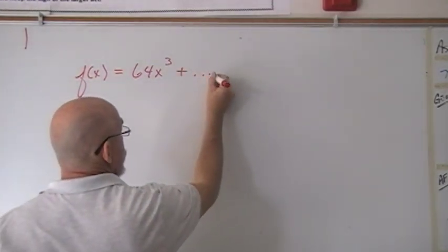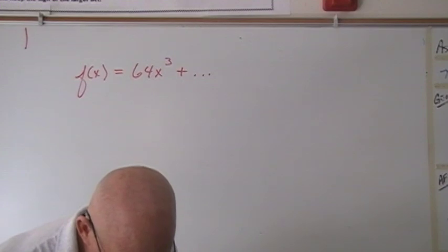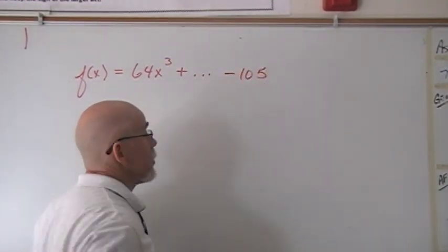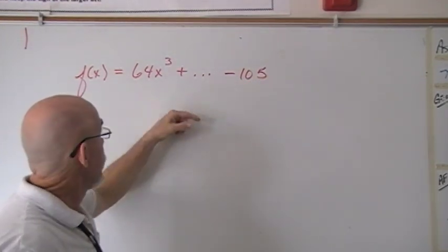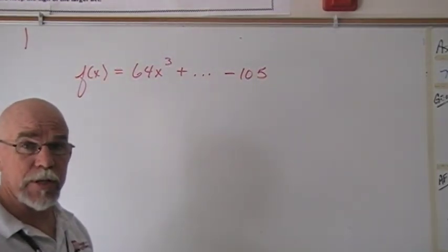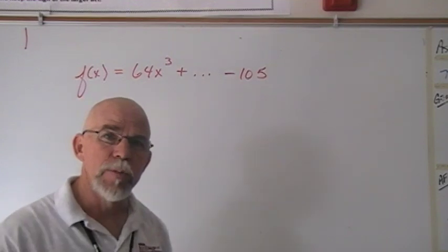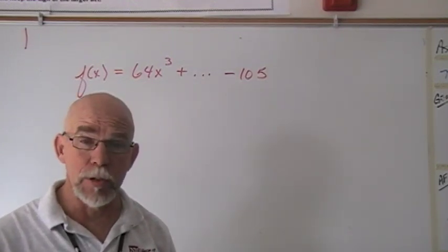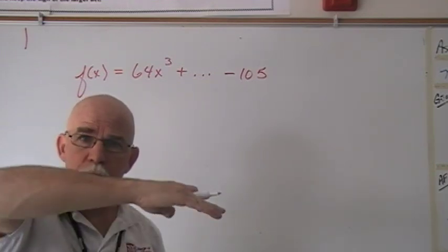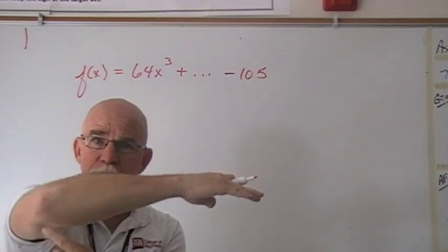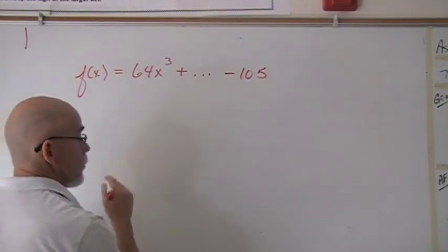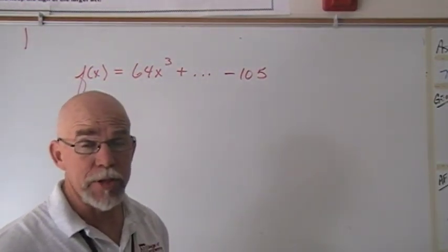We keep adding different terms until we get down to the constant term. In this case, I'm going to use an example of a constant term of negative 105. The reason we only use the constant term and the leading term is because it's those two coefficients — the constant term and the leading coefficient — that we use to determine our possible rational zeros: where that polynomial's curve will touch and cross the x-axis. Rational means it could be fractional.